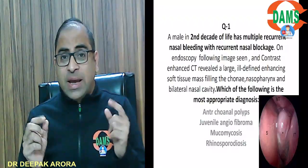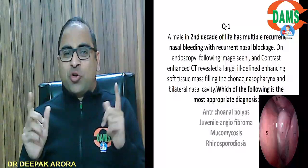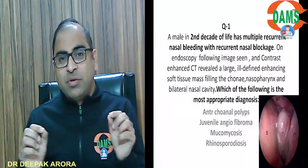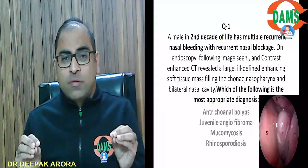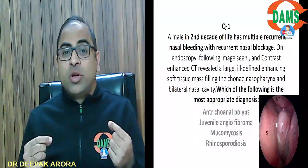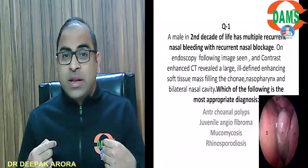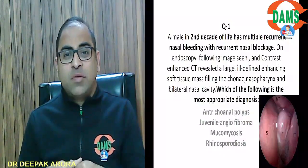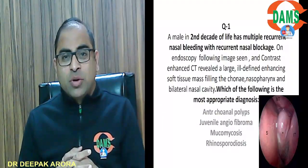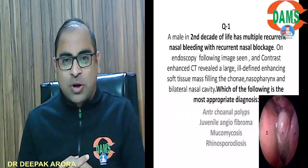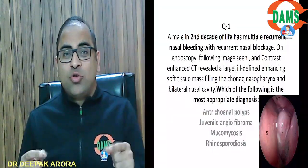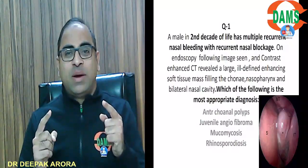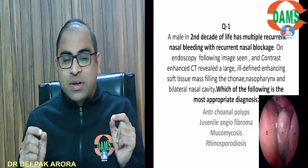For a young boy, I will go for angiofibroma or antrochoanaL polyp. The examiner is giving you the CT findings. In the last examination, they gave some CT findings: there is a soft tissue mass in the nose going into the nasopharynx and choana. The word choana is not confusing — it is just giving you a message. However, the word epistaxis is ruling out the antrochoanaL polyp, so I will go for angiofibroma because the word epistaxis is present.